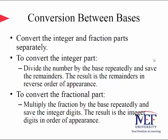Let's talk about the conversion rules between different bases. We convert the integer and fraction parts separately. To convert the integer part, divide the number by the base repeatedly and save the remainders — the result is the remainders in reverse order. To convert the fractional part, multiply the fraction by the base repeatedly and save the integer digits — the result is those integer digits in order of appearance.